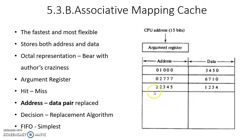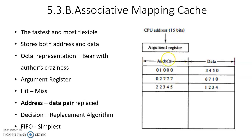Associative cache memory stores both address and data — they are called address-data pairs. The CPU communicates with associative cache memory through an argument register. The CPU puts a 15-bit address into the argument register, since it sees 32K memory locations. With a matching technique, this 15-bit address is compared with all addresses stored in cache. Whenever there is a match, the relevant data is given to the CPU — that is a hit. If the given address is not found in cache, that is a miss, and the CPU goes to main memory to fetch a block of information and replace existing data in cache.